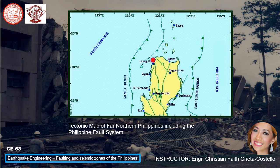This slide shows the tectonic map of far northern Philippines including the Philippine fault system. In the Luzon area you can see places such as Laoag City, Vigan, San Fernando, Aparri, Tuguegarao, Baguio City, Balor, and Iba. Also visible are the Manila Trench, East Luzon Trench, Aparri, and Vasco.